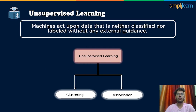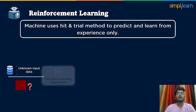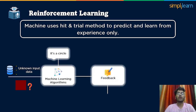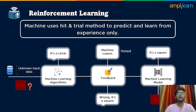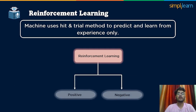Reinforcement learning is a hit-and-trial method. In the absence of any data, the machine is bound to learn from its experience only. For example, suppose we input an image of a square — the machine learning model will respond using past experience and give output as a circle. Then feedback is provided: 'wrong, it's an image of a square.' The machine learning model will learn from this feedback and predict the correct output when we input the same image next time. Reinforcement learning can be further classified into positive reinforcement learning and negative reinforcement learning.